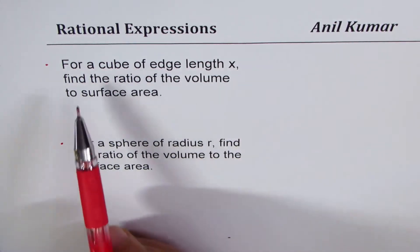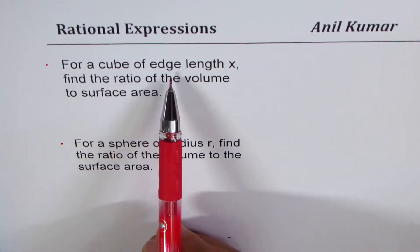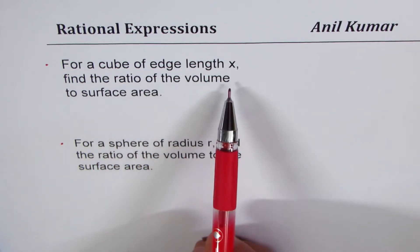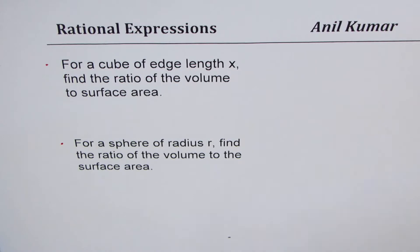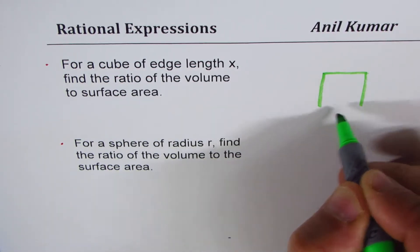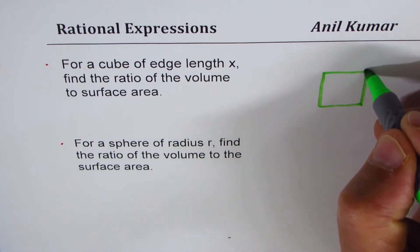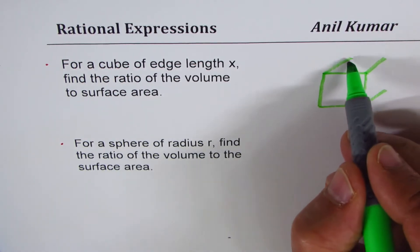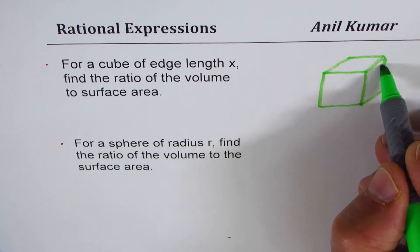The first one is for a cube of edge length x, find the ratio of the volume to the surface area. So let's sketch a cube. All equal sides. A cube is a three-dimensional figure as you know. That's an easy way to sketch. There you go.